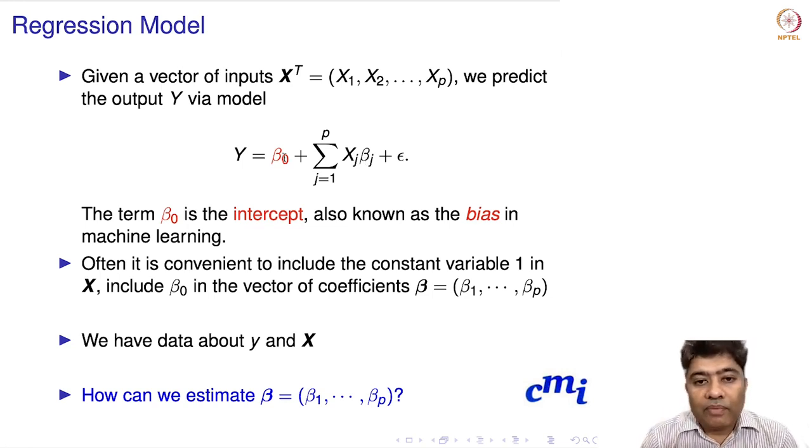This is the same problem: we have a bunch of x's, we have Y. Given X and Y, we want to estimate the betas. That's where the whole problem lies.